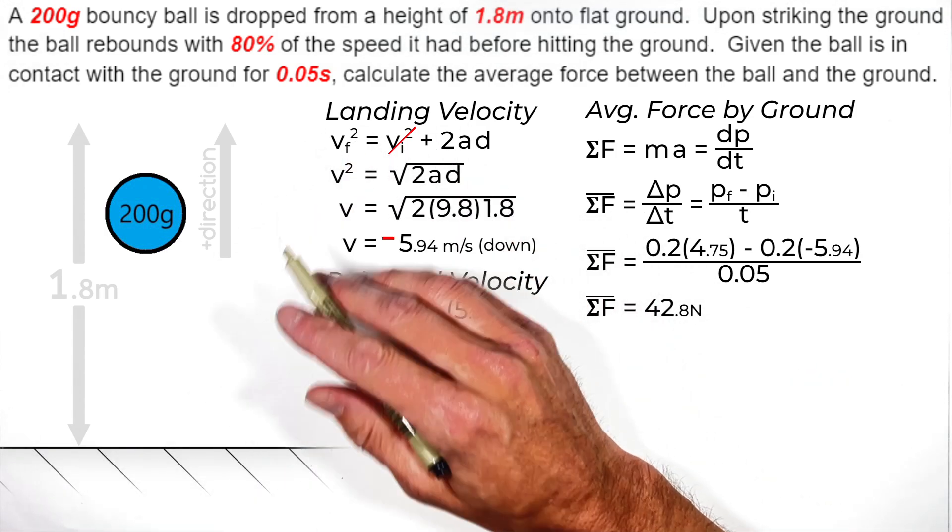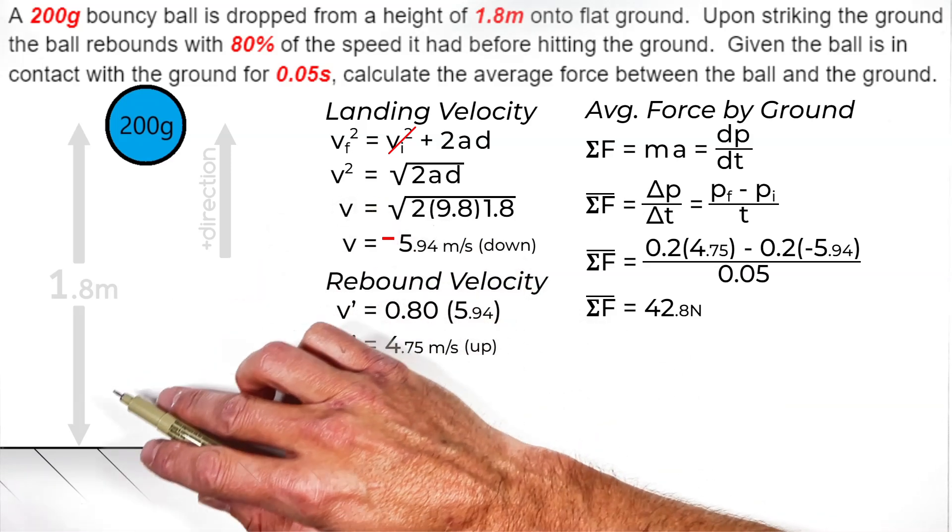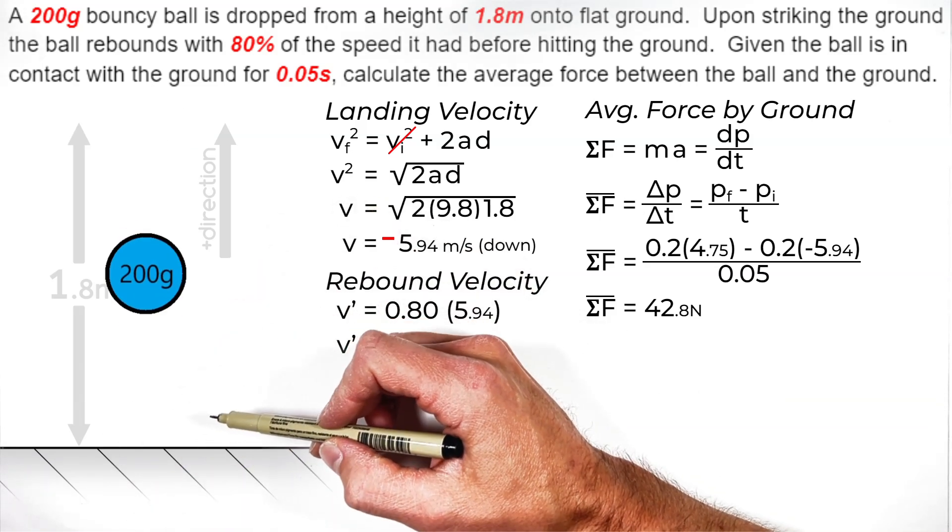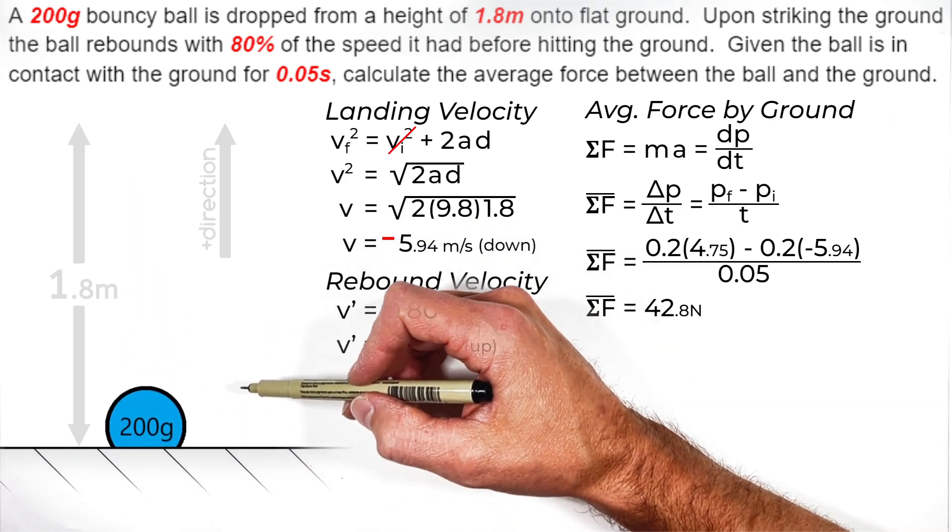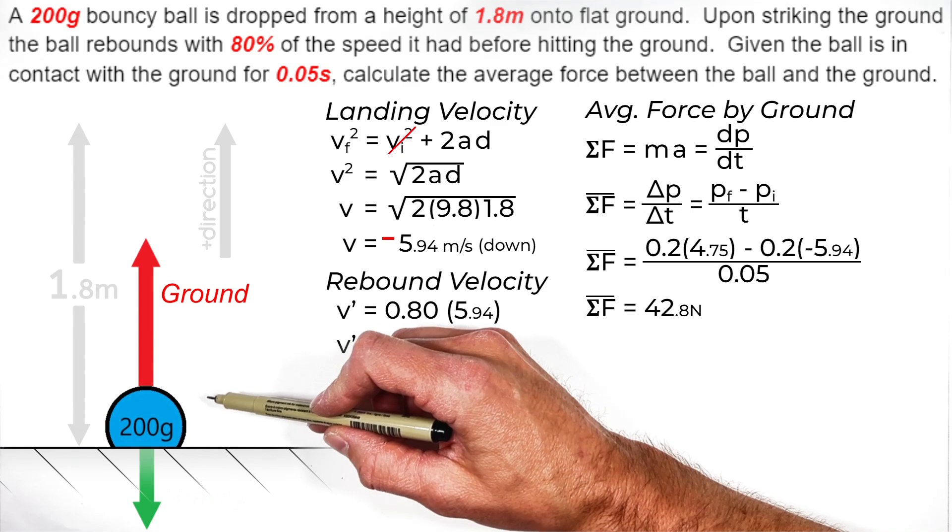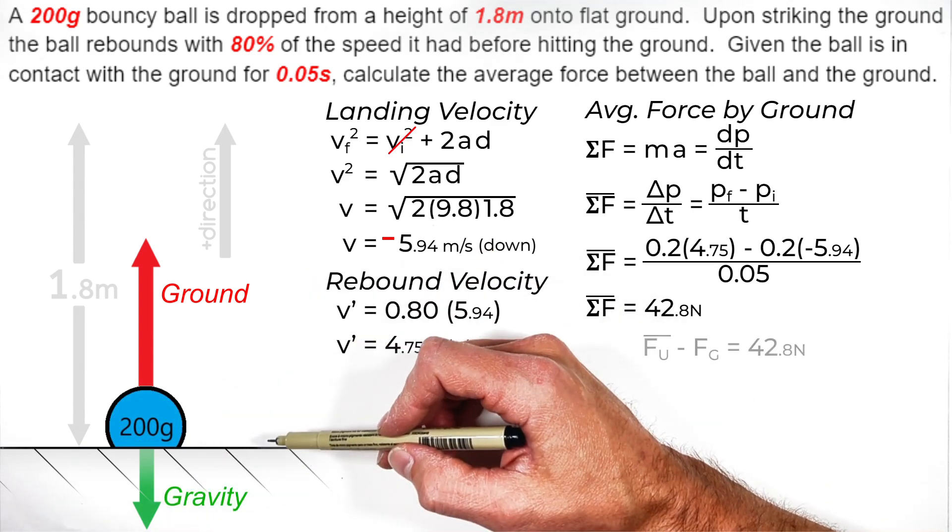You see, we're trying to solve for the force between the ground and the ball when this collision occurs. But when the ball strikes the ground, the ground isn't the only force acting on the ball. There's in fact two forces acting on the ball. There's the ground pushing upward and gravity pulling downward, and we have to account for both of those.